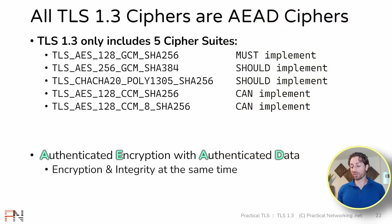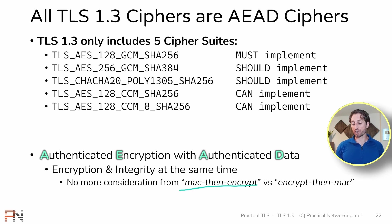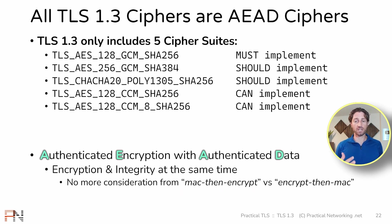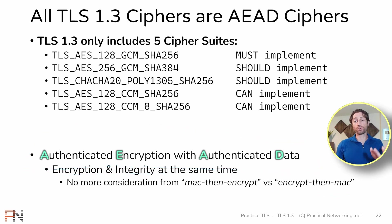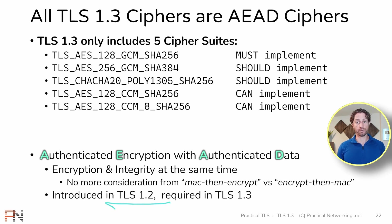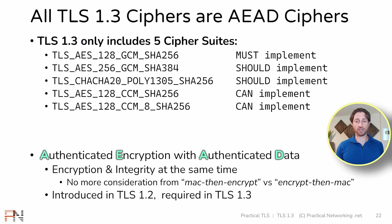The benefit of AEAD is that you no longer have to worry about whether to do encryption or integrity first. This removes the consideration for MAC-then-encrypt or encrypt-then-MAC. TLS 1.2 did MAC-then-encrypt — hashing first, then encryption — and that choice ended up causing a bunch of security vulnerabilities. A better choice would have been encrypt-then-MAC, which is what IPsec does. But the best choice is to use an AEAD cipher that does encryption and integrity at the exact same time. AEAD ciphers were introduced in TLS 1.2, but in TLS 1.3, every cipher is an AEAD cipher, meaning every TLS 1.3 session includes this better approach to integrity and confidentiality.